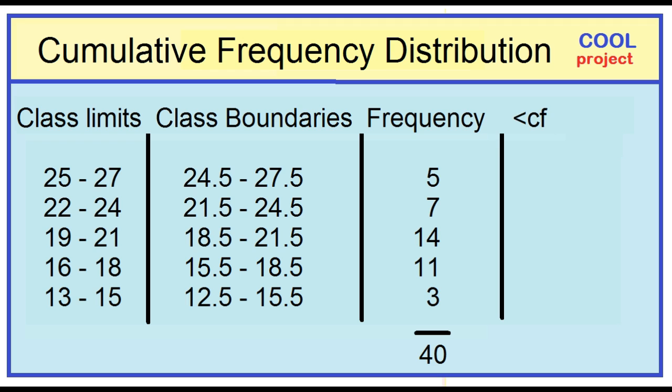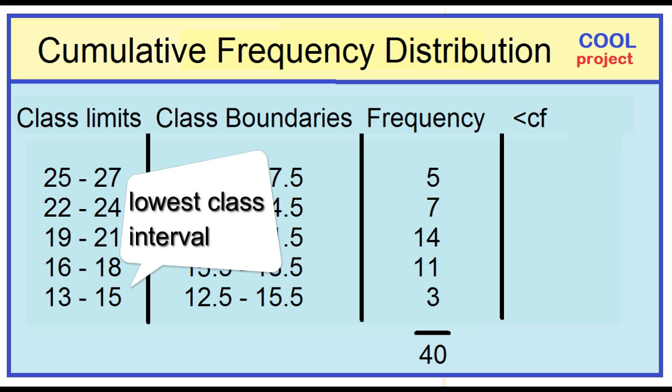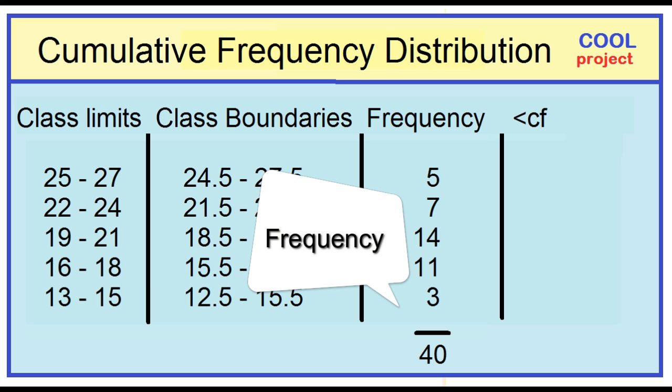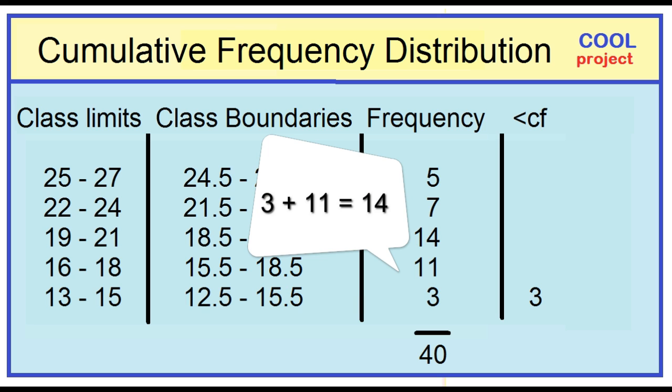How to calculate less than cumulative frequency? Let's use the data about the ages of 40 women when they have their first boyfriend. How to calculate the less than cumulative frequency? First, copy the frequency of the lowest class interval. The frequency of the lowest class interval is 3. Then add the frequencies successively.